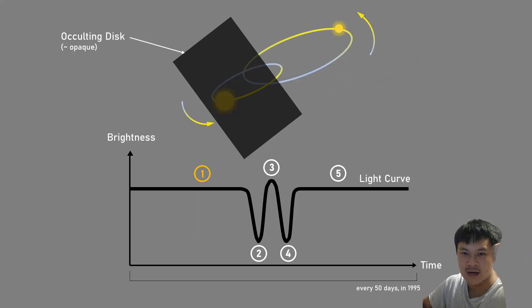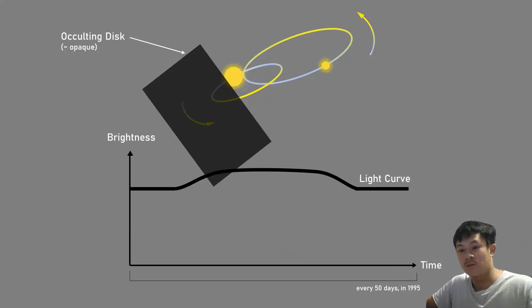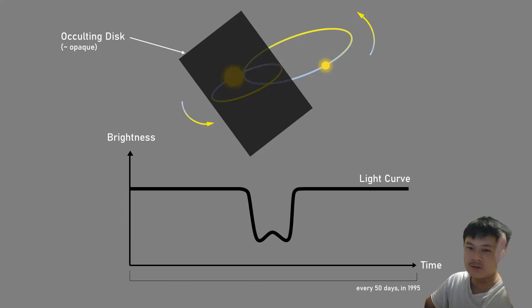There are five stages for how the binary evolution evolves as it orbits. First stage: you see the light from the small star. As it orbits, both stars peek behind the occulting disk, then very briefly the large star peeks out, quickly peeks back in, and then the small star peeks out again. You have this W-shaped looking light curve which is periodic, and depending on the location of the occulting disk, the light curve dynamically evolves.